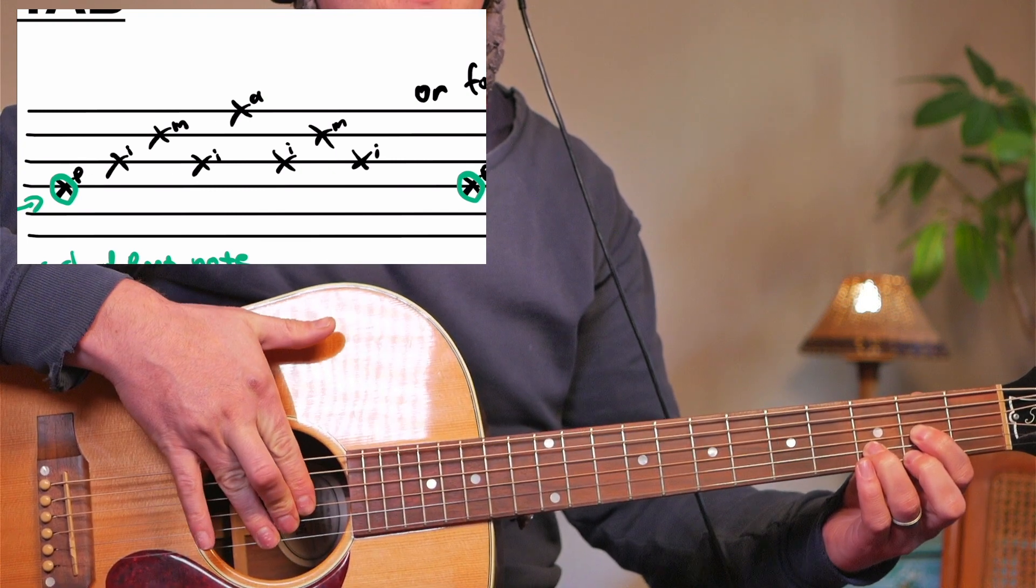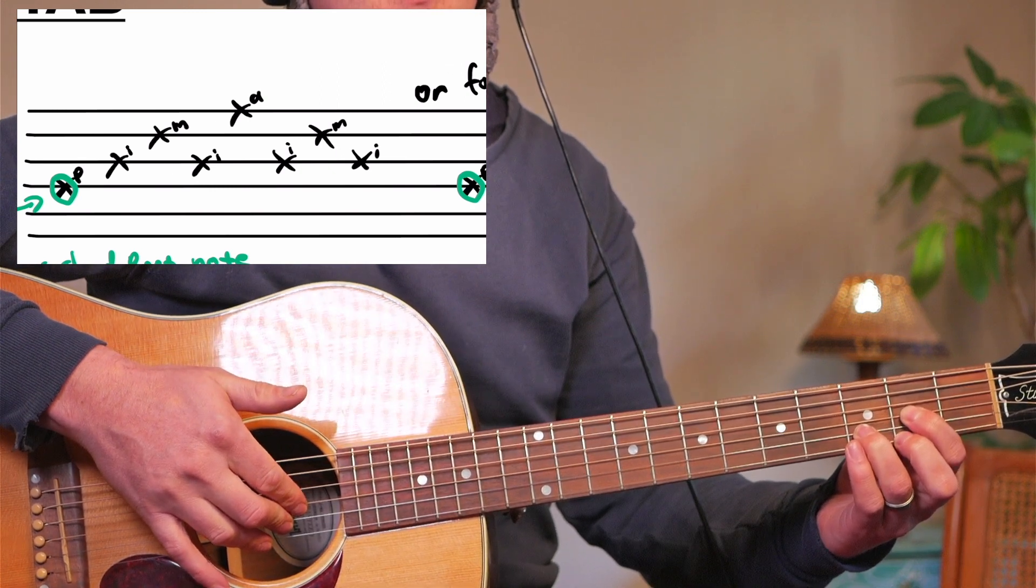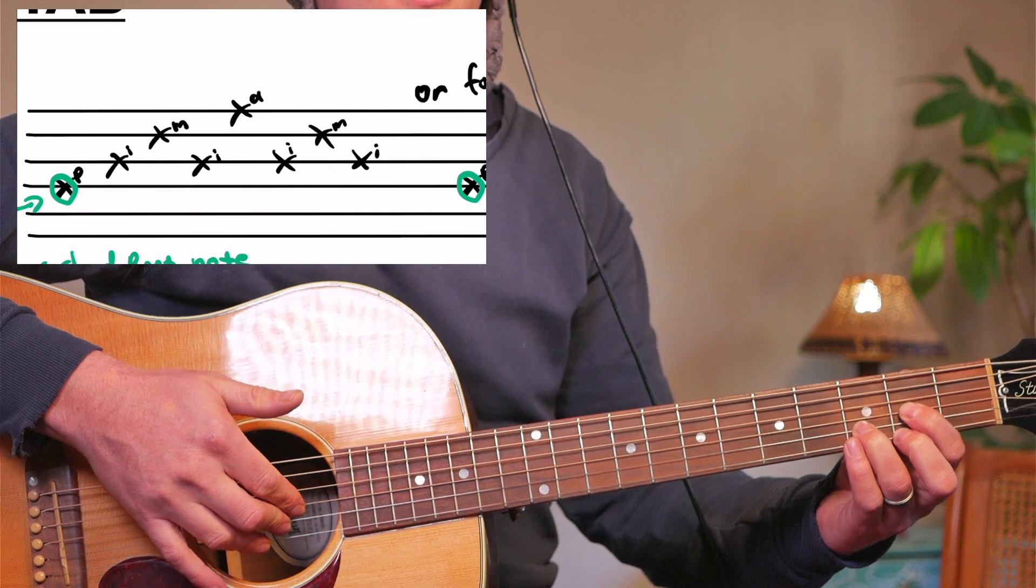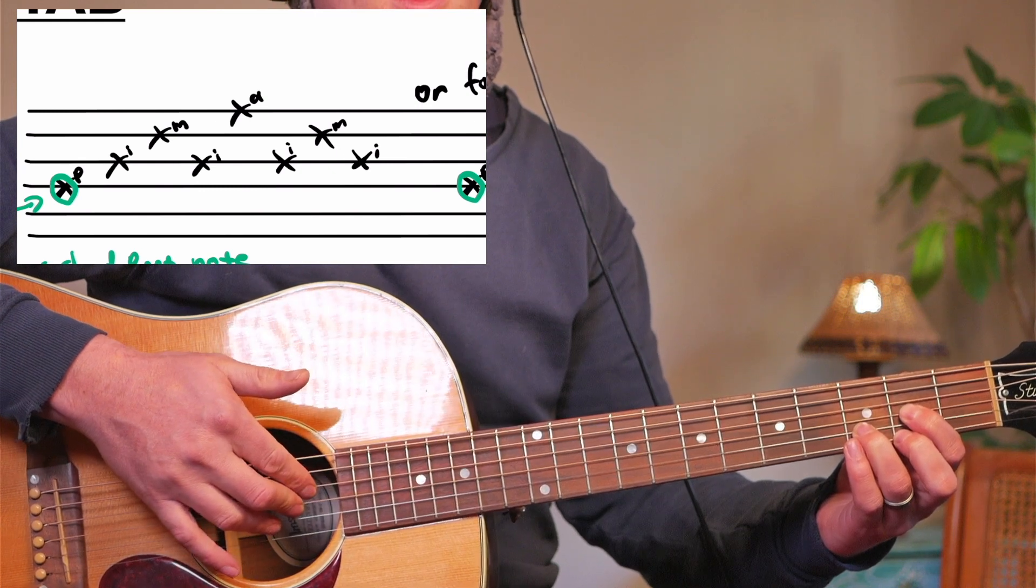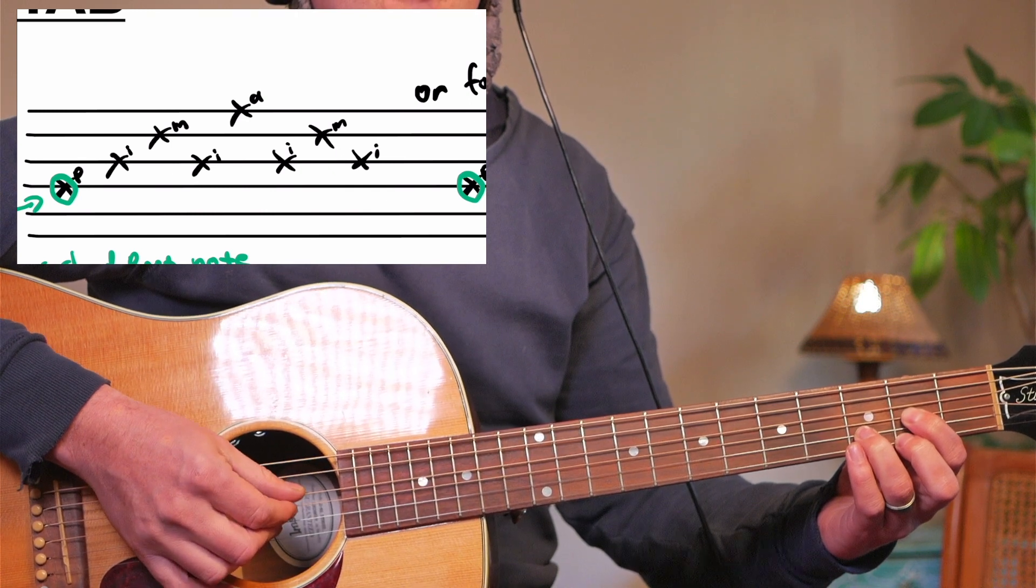These three fingers each have a string assigned to them and it stays like that, except when we go to the next, the A chord or the next chord, the G, we're going to move everything up. But for the most part they stay here and the bass stays on the fourth string. So we go.